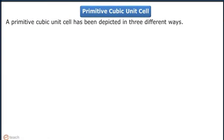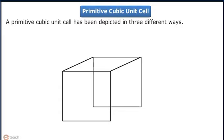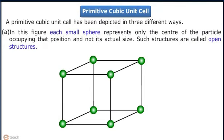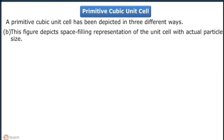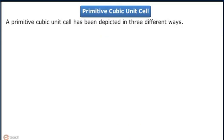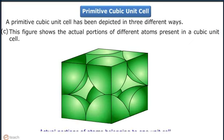A primitive cubic unit cell has been depicted in 3 different ways. The first is an open structure, where each small sphere represents only the center of the particle occupying that position and not its actual size. The second is a space-filling representation of the unit cell with actual particle size. The third shows the actual positions of different atoms present in a cubic unit cell.